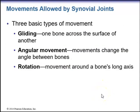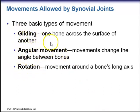There are three basic types of movement allowed by synovial joints: gliding, angular movement, and rotation. Gliding is when one bone moves across the surface of another. Angular movements change the angle between bones. Rotation is movement around a bone's long axis.